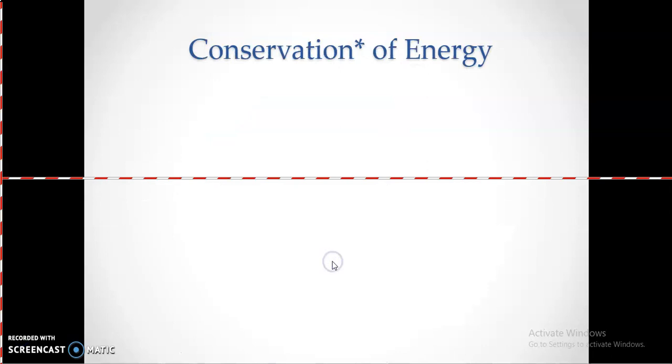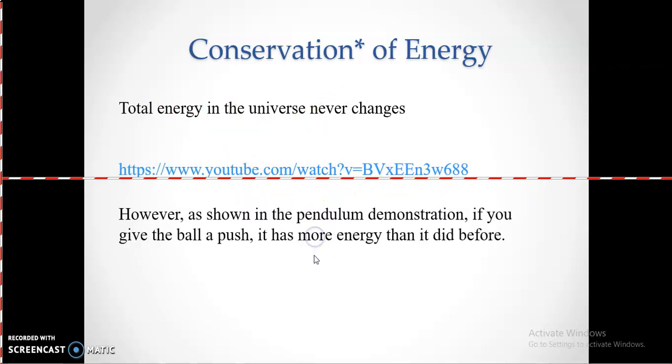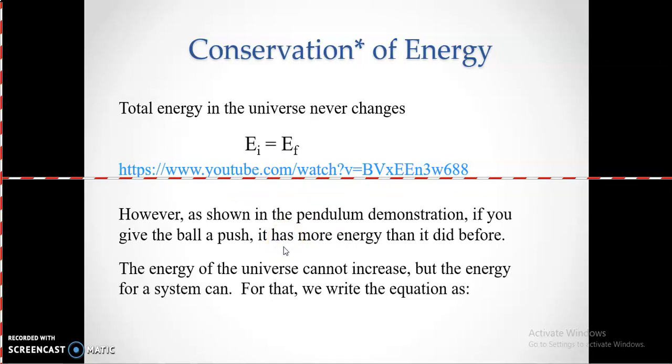Alright, now we're going to move on to the idea of conservation of energy in more detail. So the total amount of energy in the universe never changes. And there's a video you can watch if you're interested. Let me just bring up a little bit more. Here we go. So the idea that the total energy in the universe never changes is initial energy equals final energy. It's just a simple way to put it. We're going to make this a little more complicated and then a lot more complicated looking. But the idea is fairly simple. The energy of the universe cannot increase, but the energy for a system can.